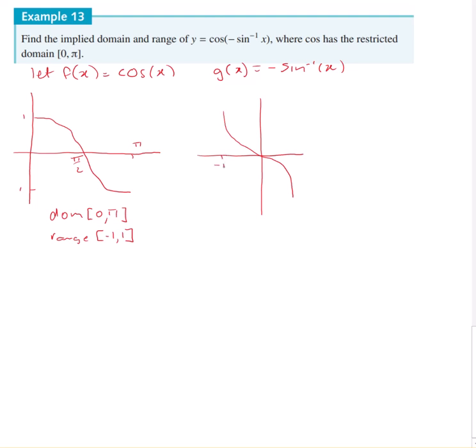So this will be negative 1, this here will be 1, we'll be at minus pi on 2 and we'll be at pi on 2.